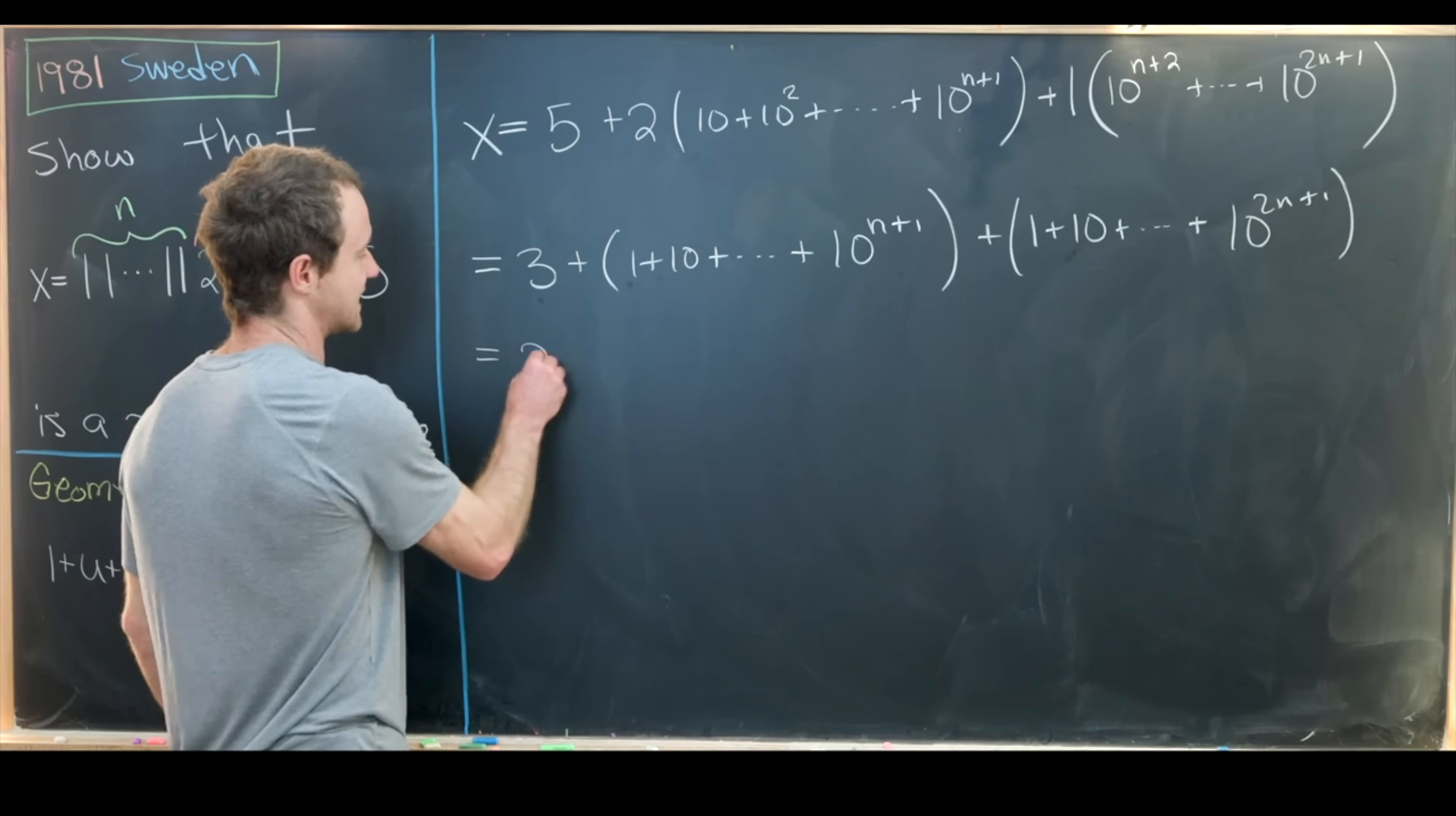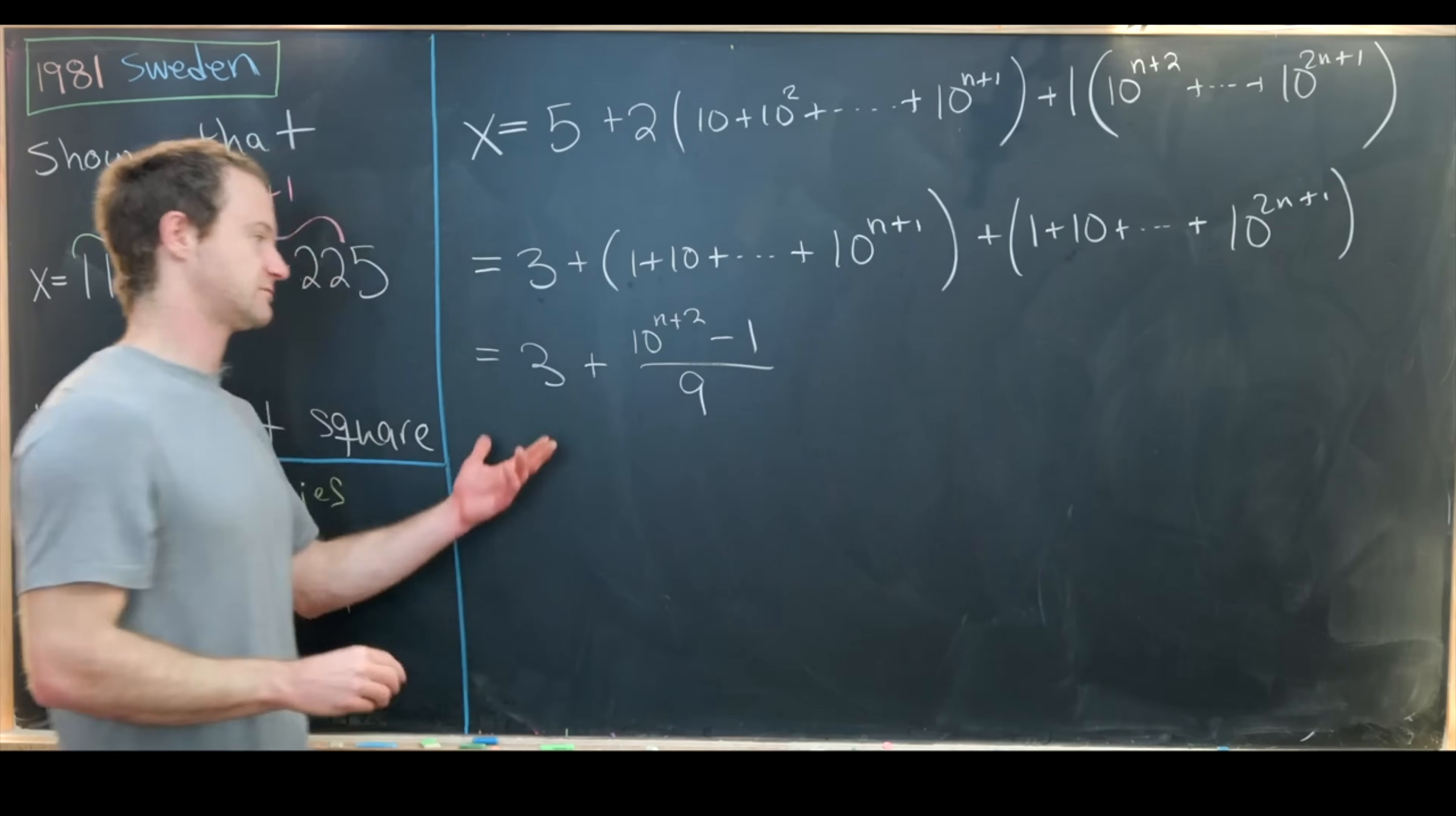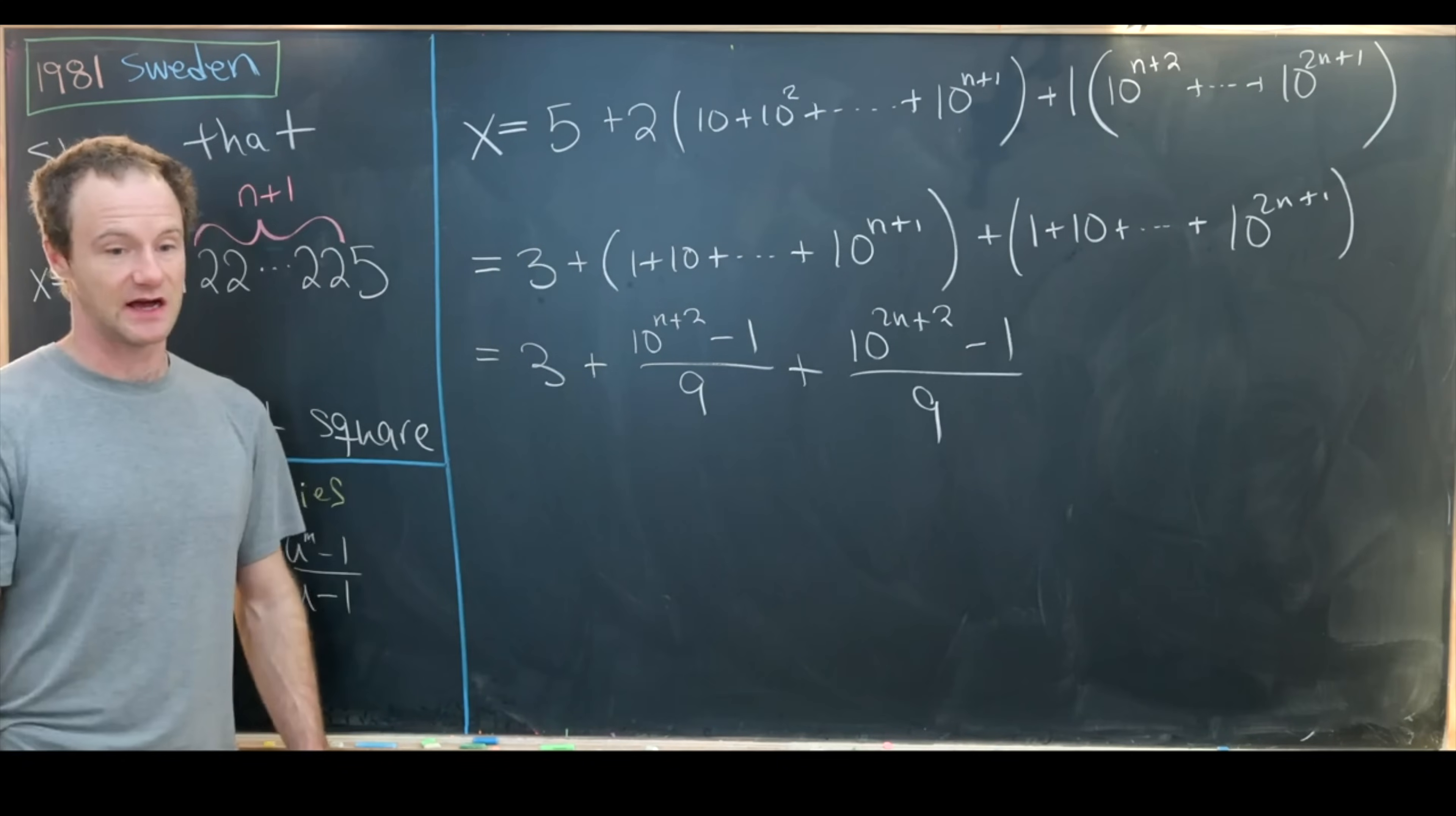Now let's do that. That's going to give us 3 + (10^(n+2) - 1)/(10 - 1), but notice 10-1 is 9, and then this sums up to (10^(2n+2) - 1)/(10 - 1) again, which is 9.